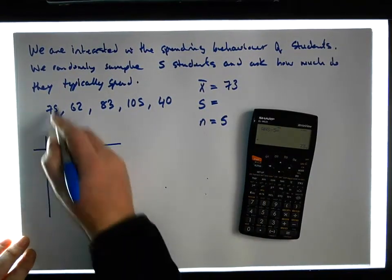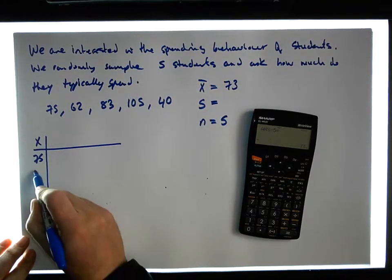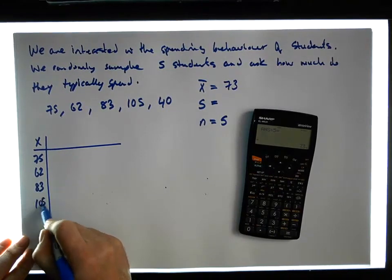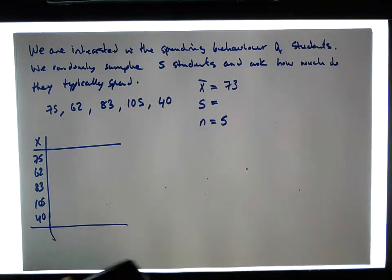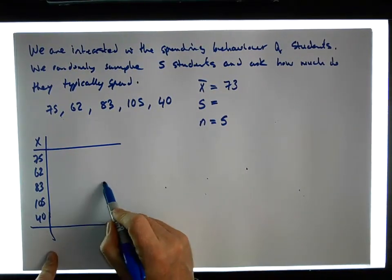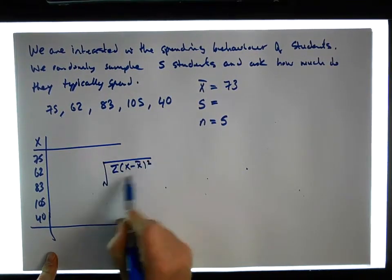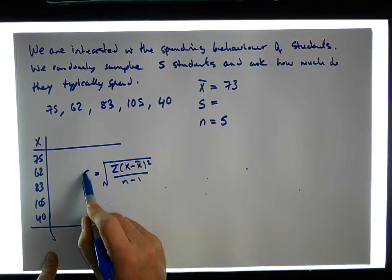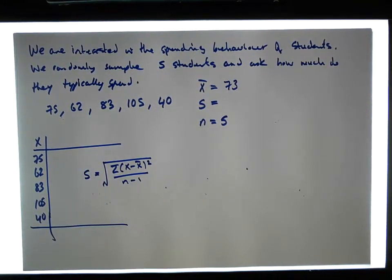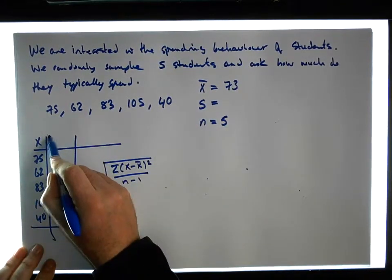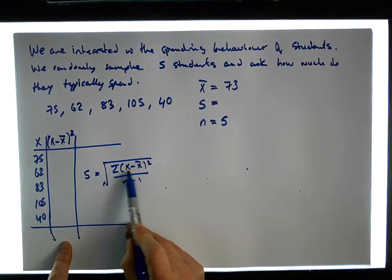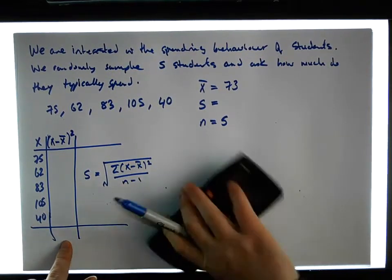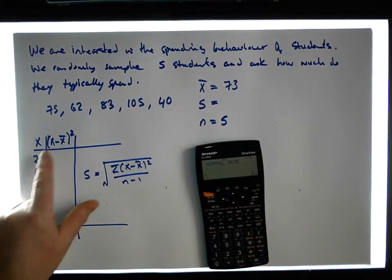Now I'll construct a table to calculate the standard deviation. My x values are 75, 62, 83, 105, and 40. The standard deviation is the square root of the sum of squares — the sum of (x minus x-bar) squared — all divided by n minus one. So I'll calculate (x minus x-bar) squared for each observation, then sum up that column.